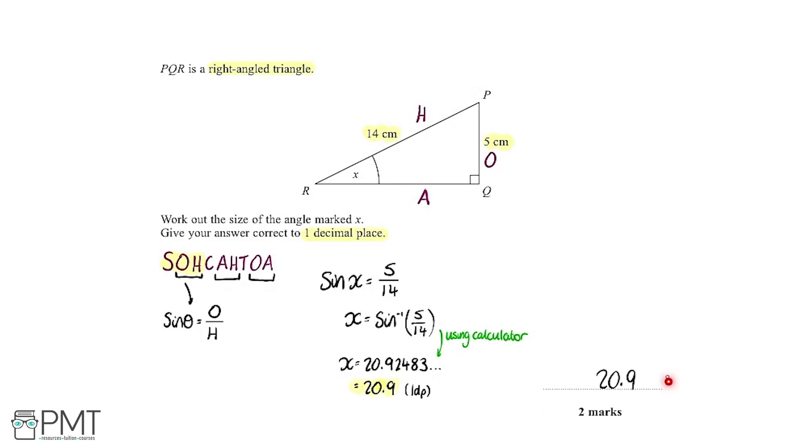And handily, they've already included our little degree sign here. So we don't need to worry about that. And for this question, we get one mark if we work out that sin X equals 5 over 14, and we get the second mark for getting the correct answer of 20.9 degrees.